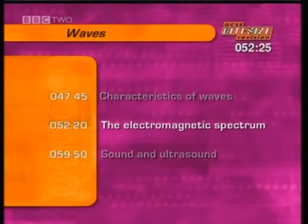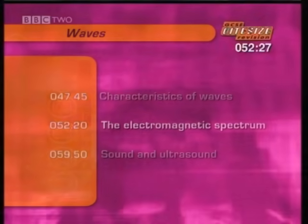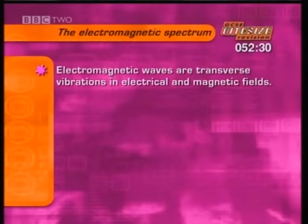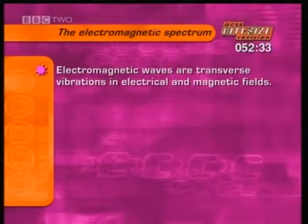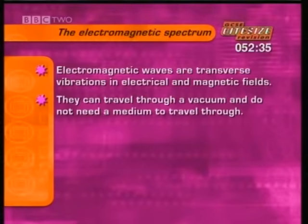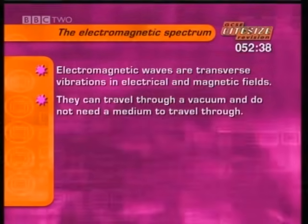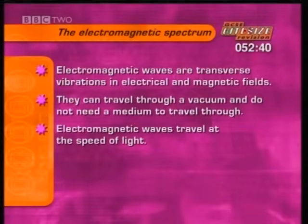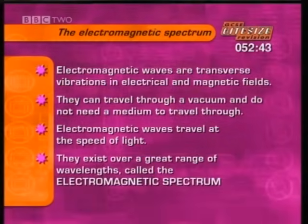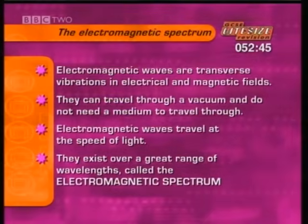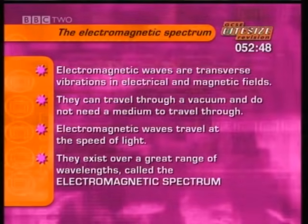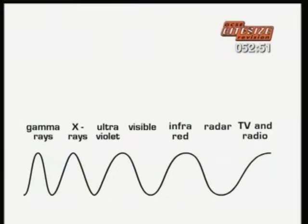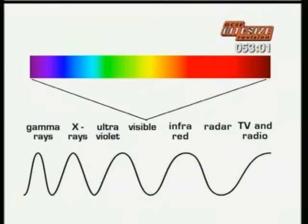Next, the electromagnetic spectrum. Electromagnetic waves are transverse vibrations in electrical and magnetic fields. They can travel through a vacuum and do not need a medium to travel through. Electromagnetic waves all travel at the speed of light and exist over a great range of wavelengths, called the electromagnetic spectrum. Here is the electromagnetic spectrum, with very short gamma rays at one end and very long radio waves at the other. Visible light is only a small portion in the middle.